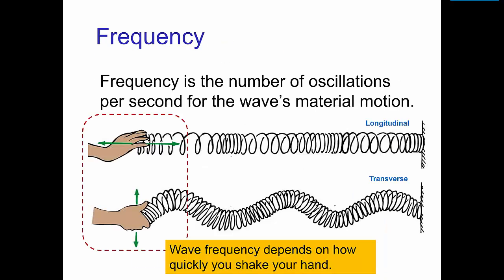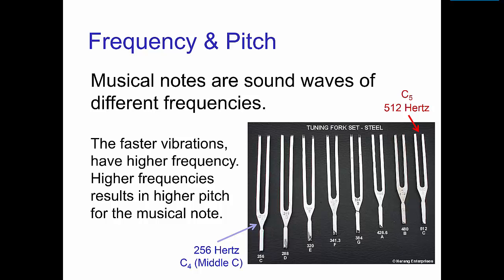The frequency is the number of oscillations per second for the wave's material motion. If we were creating waves on a slinky, then how rapidly we shake it determines the frequency. The faster you shake it, the higher the frequency. For example, if you shake it 10 times per second, then the frequency is 10 hertz. For sound waves, we detect frequency as pitch. That is, sound waves of different frequencies are heard as different musical notes.